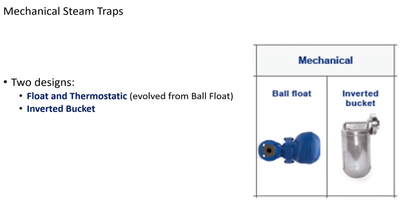Mechanical traps work on the density difference principle. Steam as a gas is much lighter than condensate as a liquid, so inside these products you get a level-control effect. There's a buoyancy component attached to a lever arm and pivot point; on that lever arm is a valve head that closes off on a valve seat. The presence of condensate is essential to how the trap opens and closes.